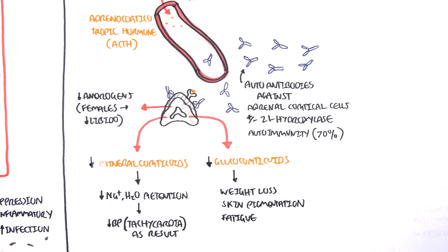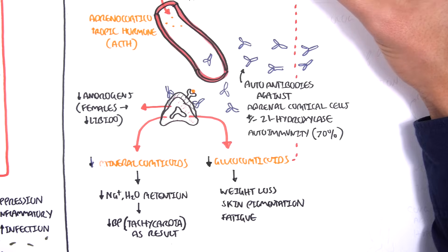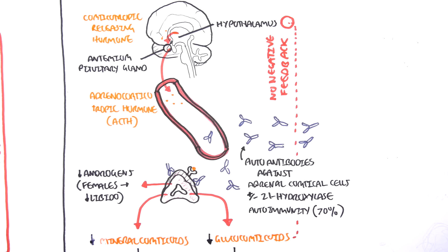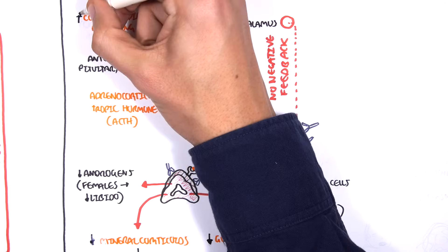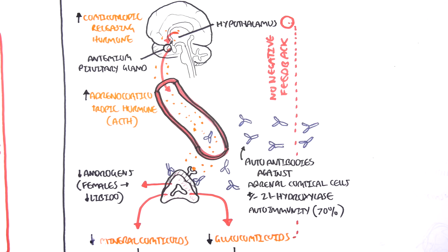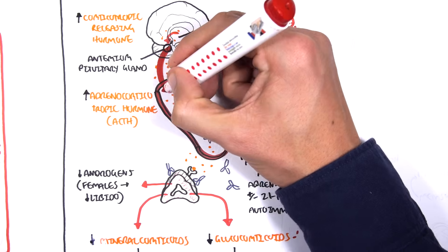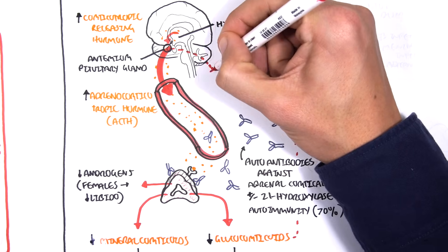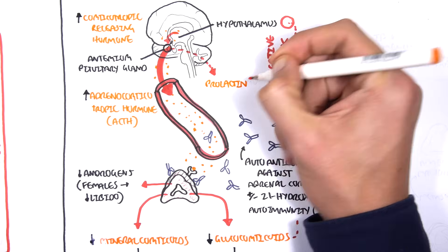Furthermore, because there is a decrease in glucocorticoids, the negative feedback is off. Remember, negative feedback only occurs when there is an increase in hormone levels in the blood. With no negative feedback by glucocorticoids or cortisol, the hypothalamus will produce more corticotropin-releasing hormone and therefore stimulate the anterior pituitary to produce more adrenocorticotropic hormone. The increase in corticotropin-releasing hormone will actually stimulate other hormones produced by the pituitary gland, including prolactin.